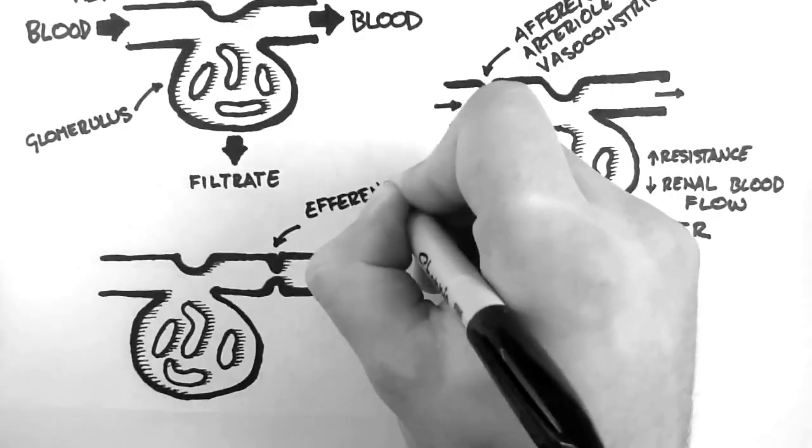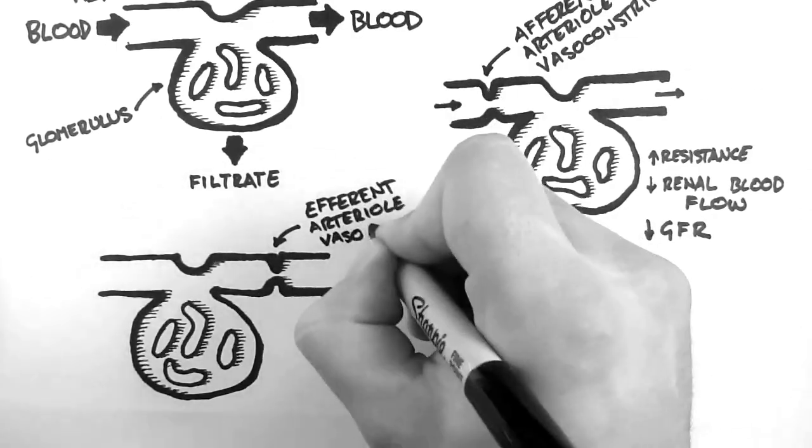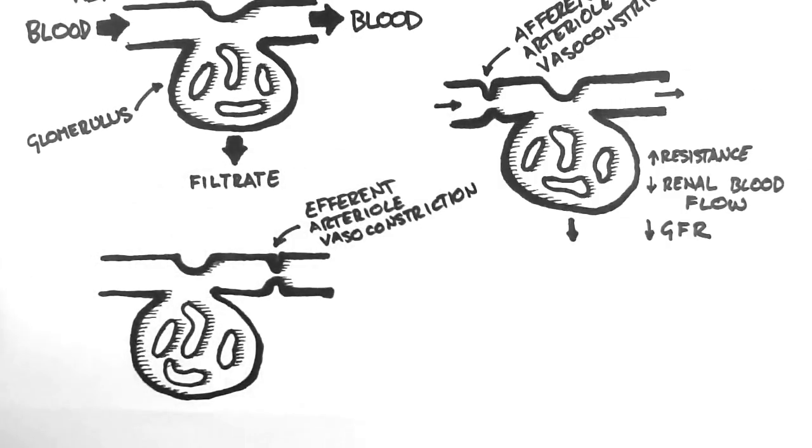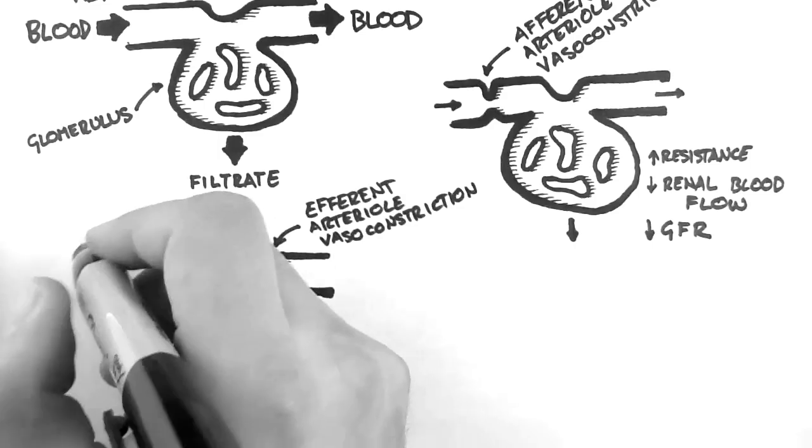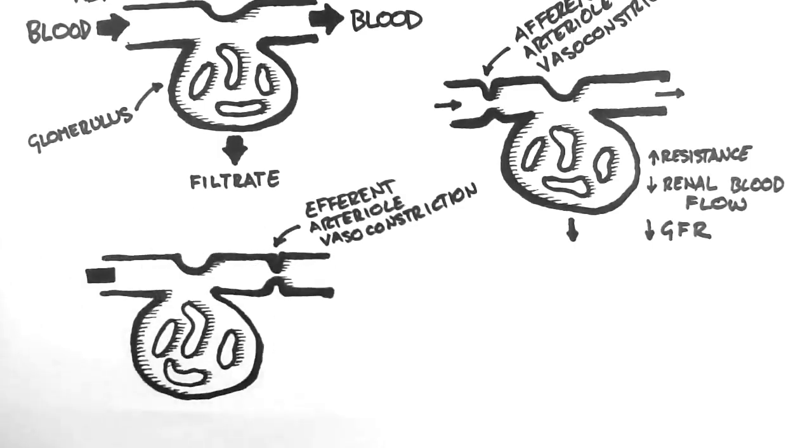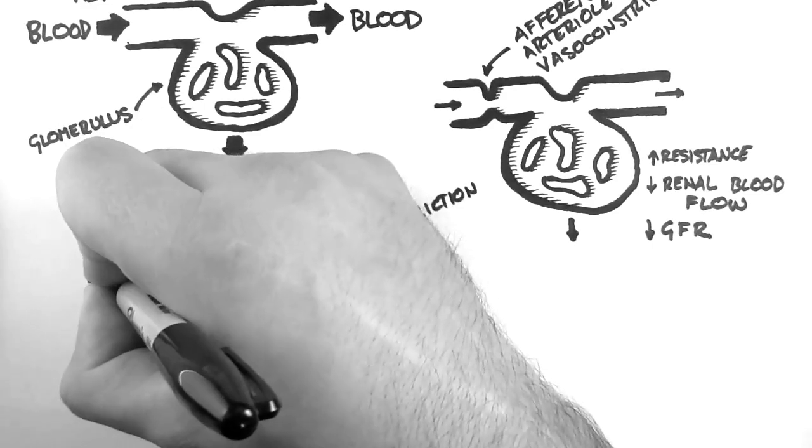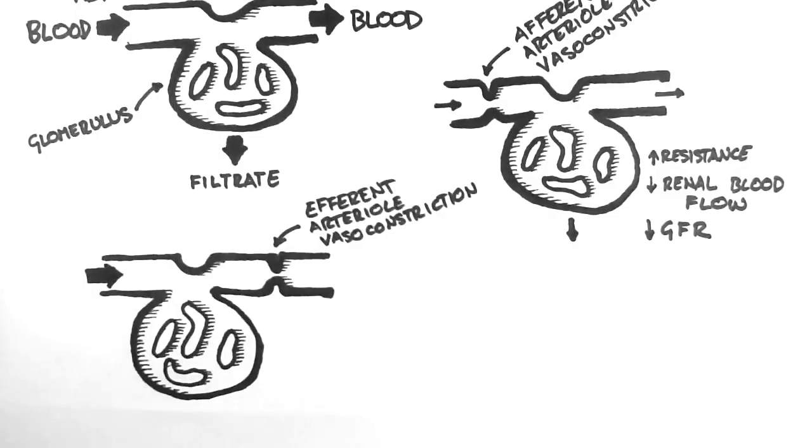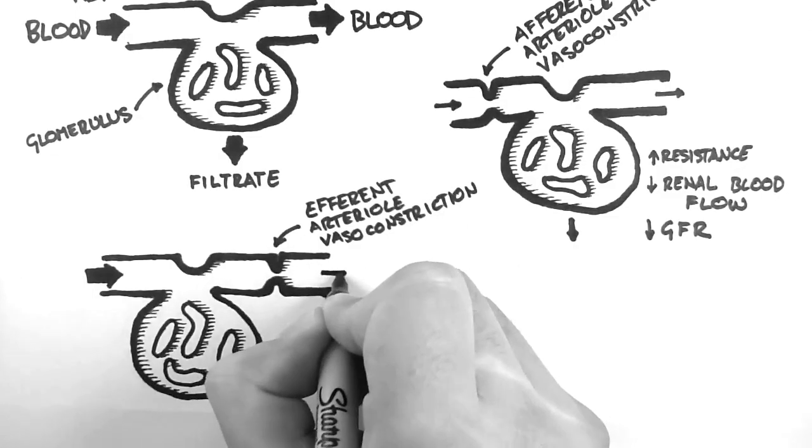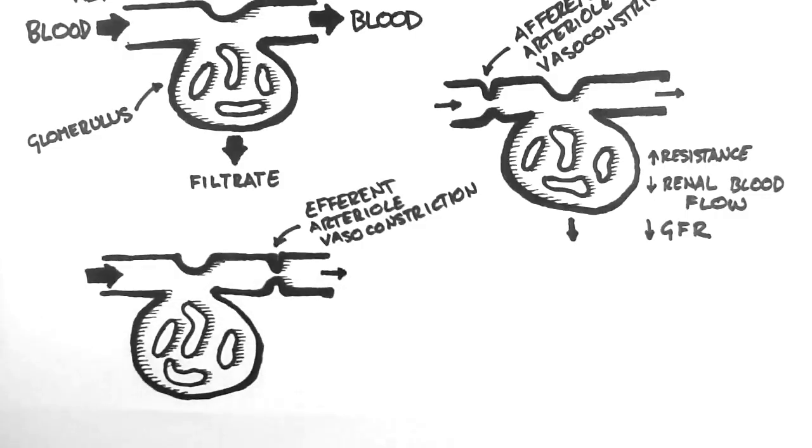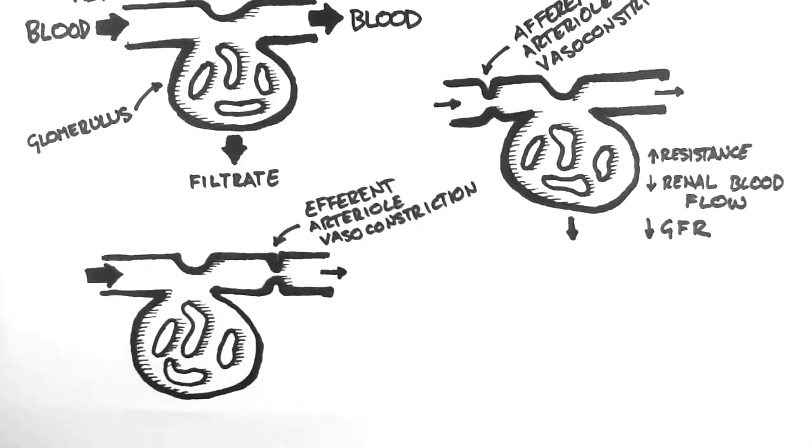Now let's look at the situation where the efferent arteriole is vasoconstricted. Blood is able to enter the glomerulus easily because the afferent arteriole is dilated. However, because the efferent arteriole is constricted, blood can't leave the glomerulus as easily.